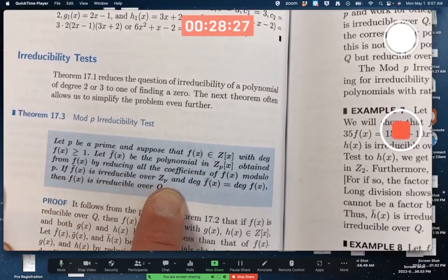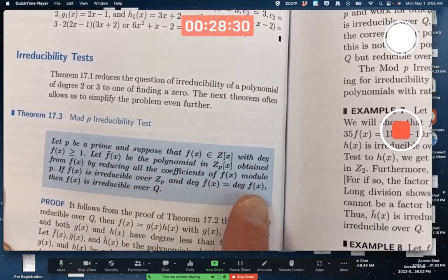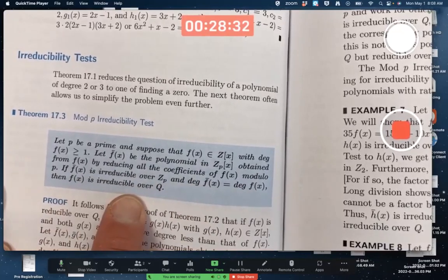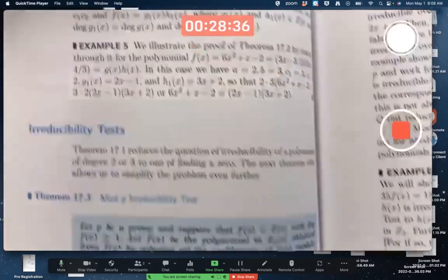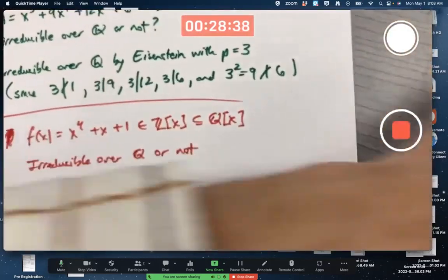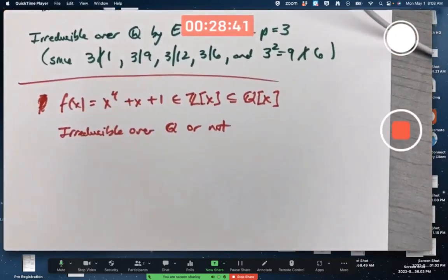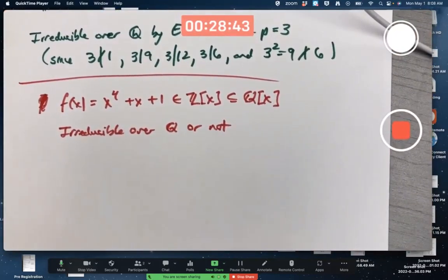and if the degree is the same as the original degree, then this test says f(x), the original polynomial, is irreducible over Q. So you're hoping you can apply this, typically with p equal to 2 or 3, and let's hope that 2 works and it does end up working.